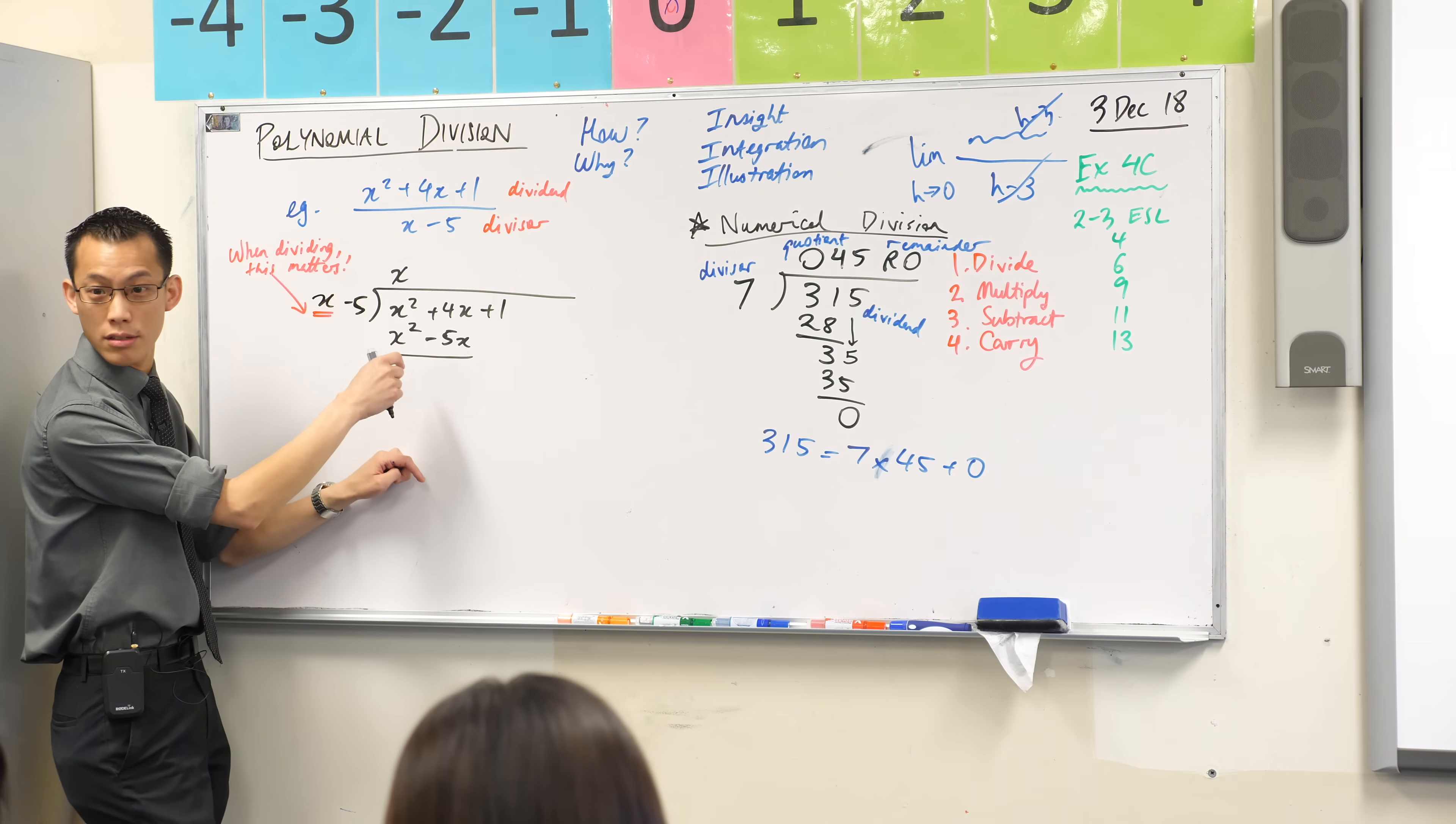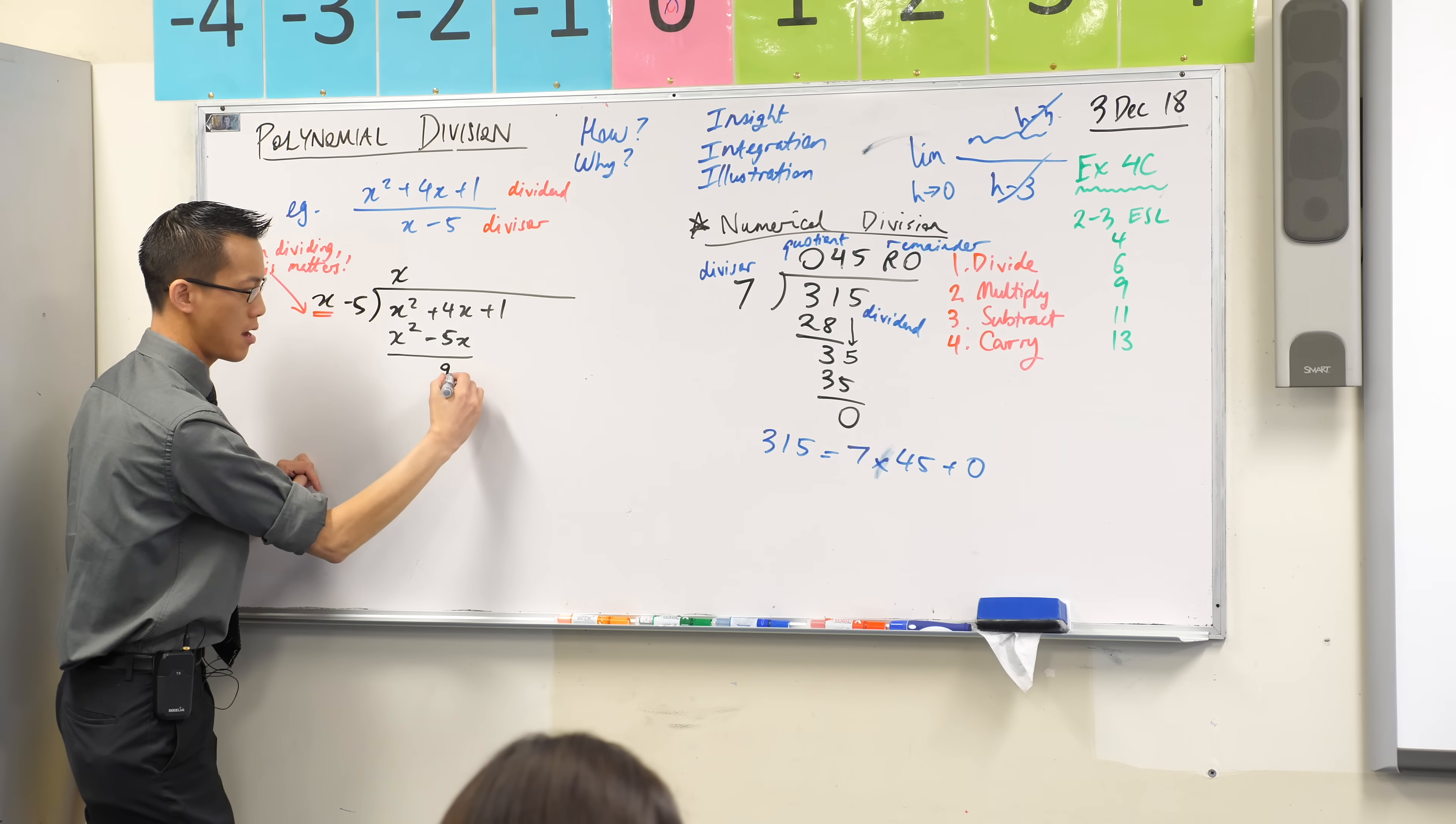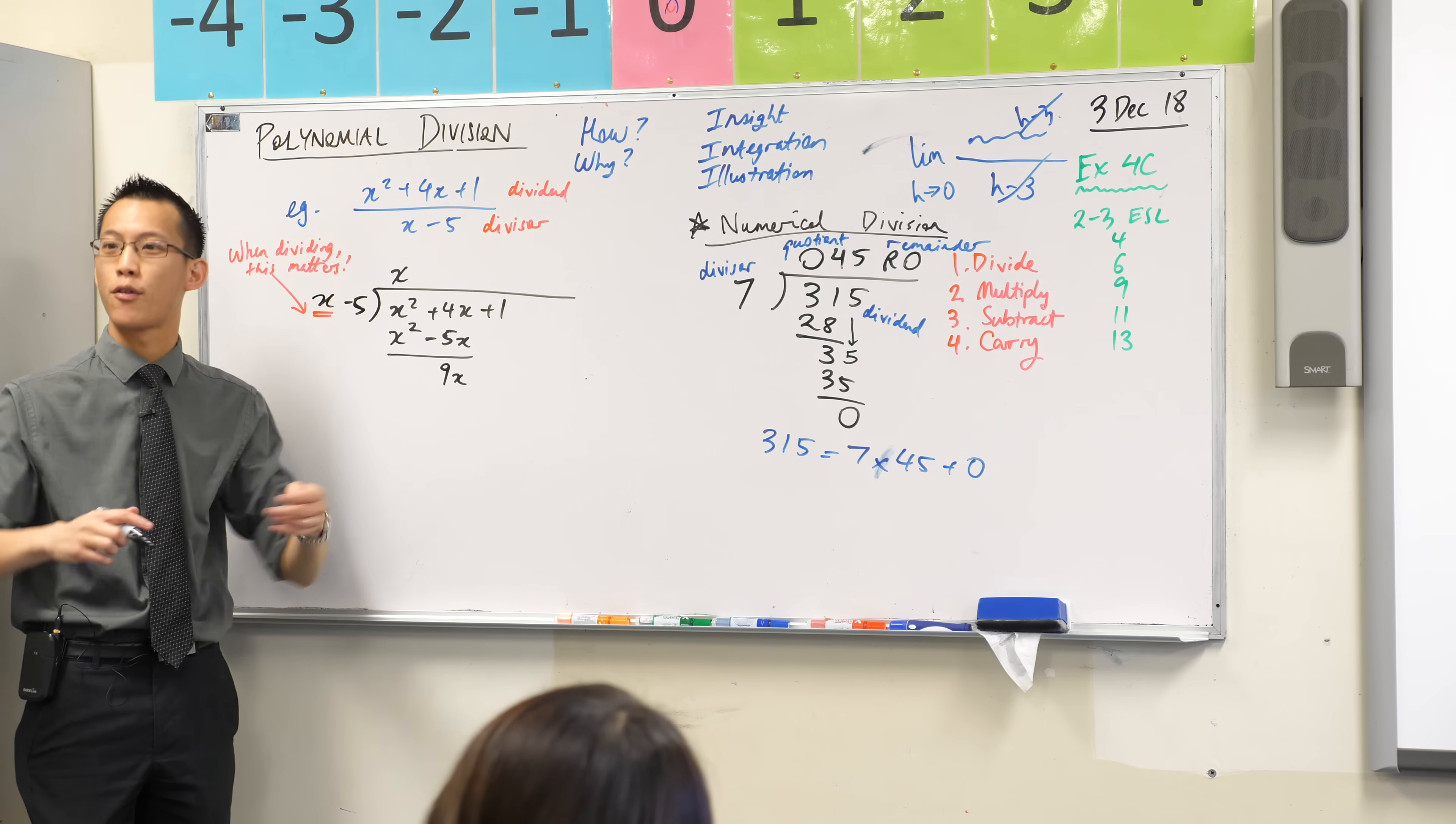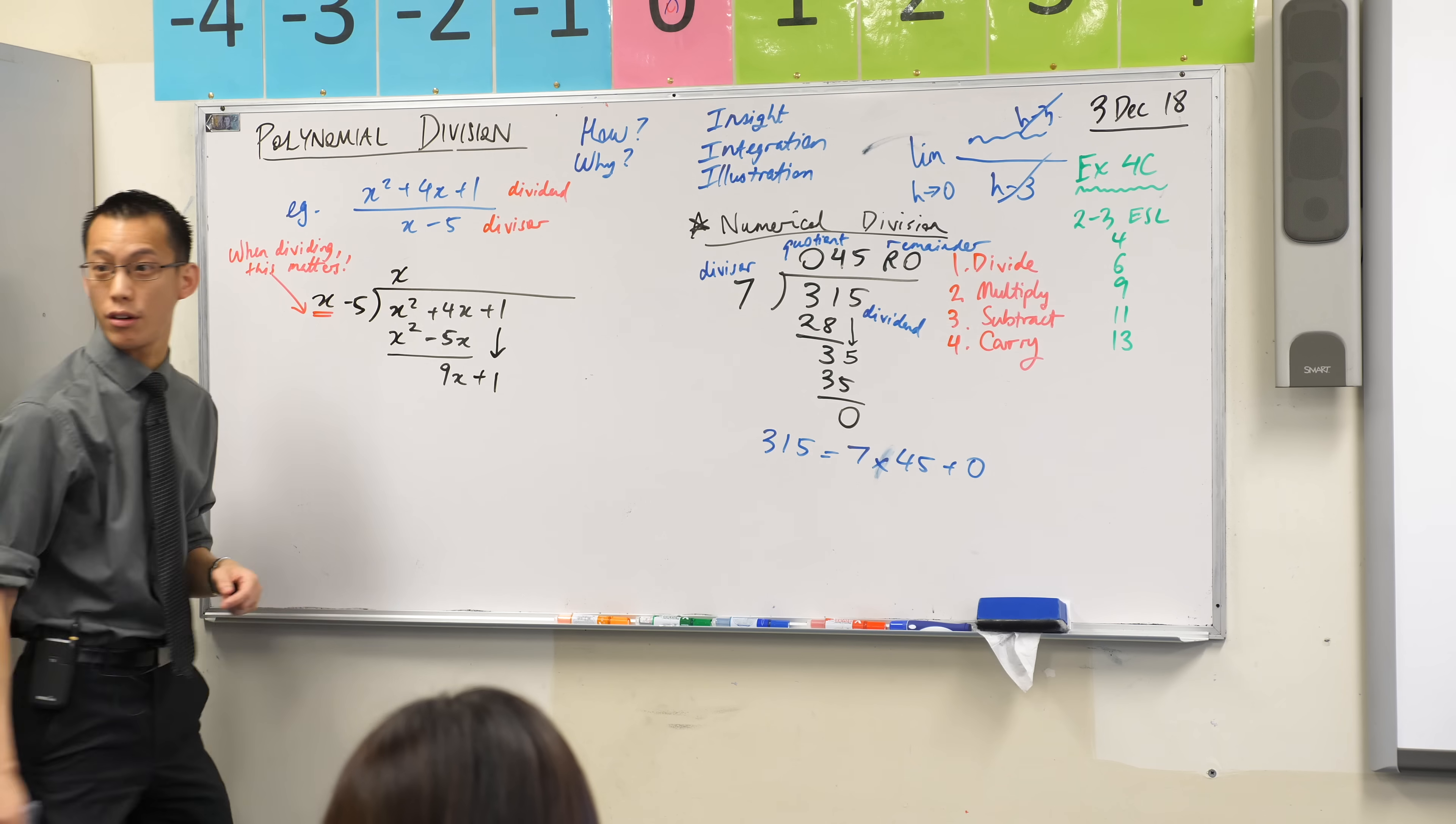These x squareds, they just go. 4x take away negative 5x is 9x. Are you okay with that? Brain's still handling all right? I've subtracted, subtraction's over. What's the last step before I re-begin? We can carry, right? Bring this guy down. Like so. You okay with that?